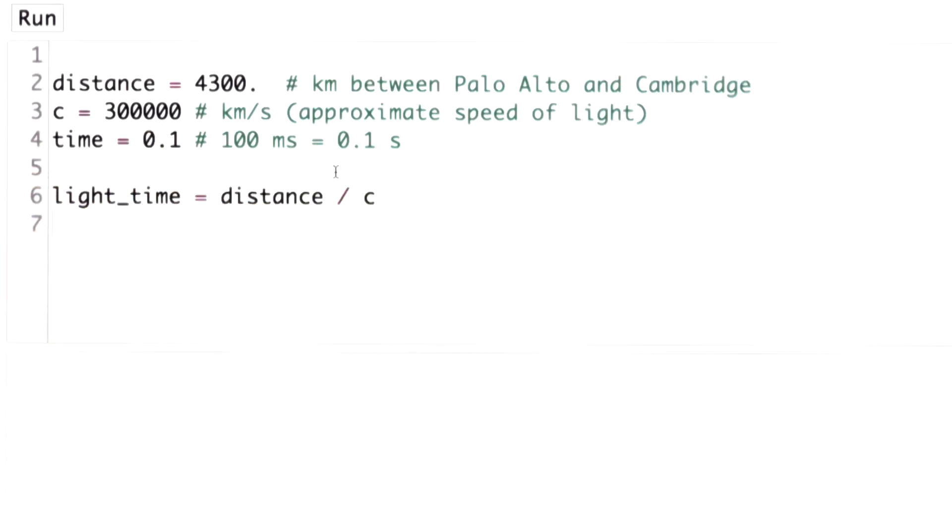And so it was 100 milliseconds, which is 0.1 seconds. And so I can compute the time it took light to travel that distance by dividing the distance by the speed of light. And let's see what that is.